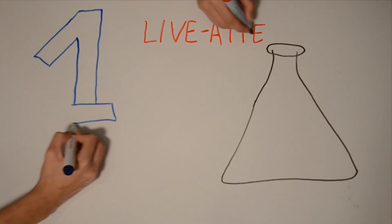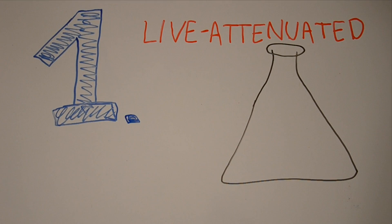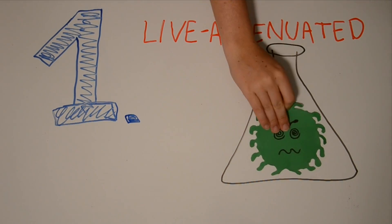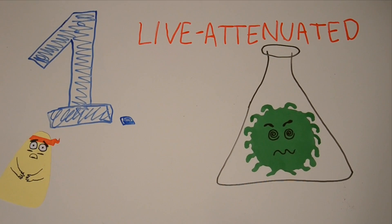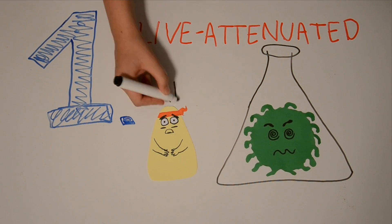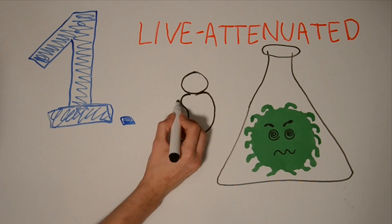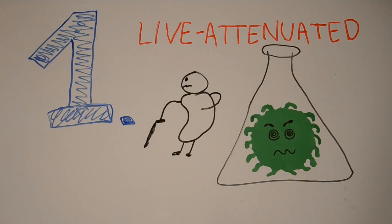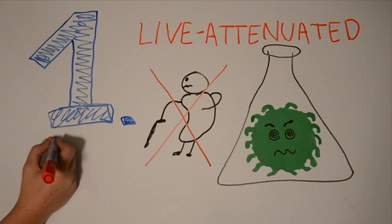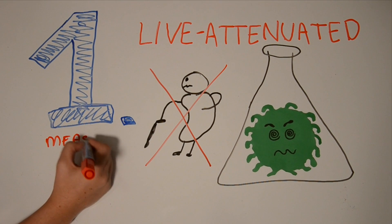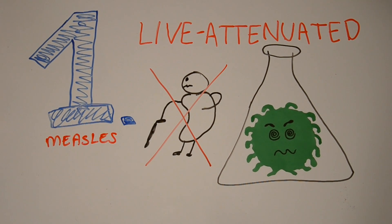The first kind are the life-attenuated vaccines containing a weakened version of the pathogen. The benefit of this kind of vaccine is that it triggers a good immune response because the weakened pathogen can easily be recognized. The disadvantage of this type of vaccine is that it can be dangerous to immunodepressive persons, like the elderly. An example of a life-attenuated vaccine is the vaccine against the measles you get as a child.